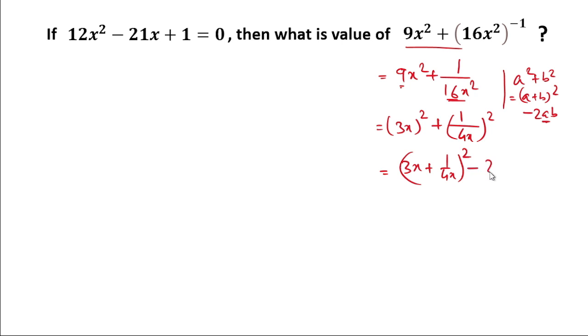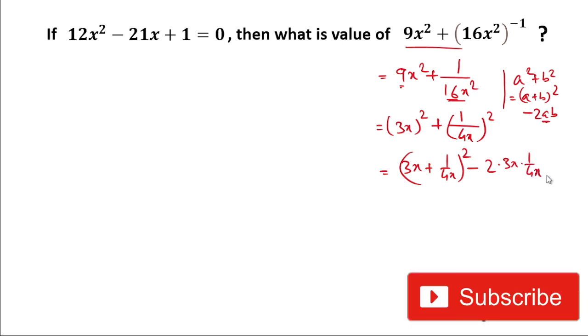So here x and x get cancelled, 2 and 2. So now we can write (3x + 1/4x)².